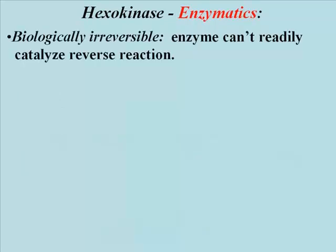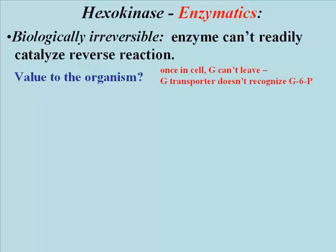The hexokinase-catalyzed reaction is biologically irreversible. You'll probably remember from chemistry that all chemical reactions, including biochemical ones, are considered reversible. We call a reaction biologically irreversible when the enzyme does not readily bind and therefore does not readily reconvert products to reactants. How does a biologically irreversible hexokinase help an organism? Once inside the cell, glucose is rapidly converted to glucose 6-phosphate, and it isn't recognized by the glucose transporter proteins that brought glucose into the cell. So this valuable nutrient, once in the cell, can't get out.